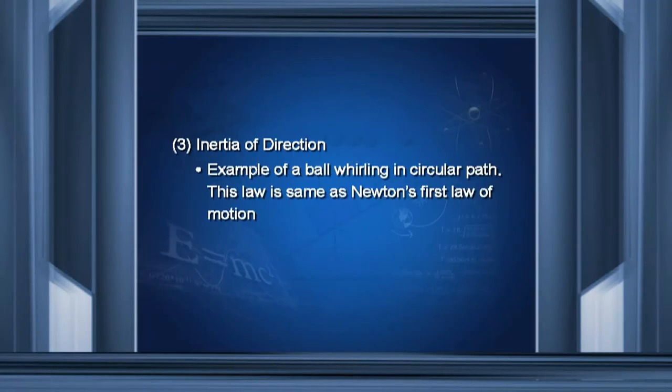The third type is inertia of direction. It states that any object moving in a straight line opposes any change in its direction. For example, if an object is tied with a string and whirled on a circular path, when you release the string, the body moves in a straight line — it will not change its direction anymore.